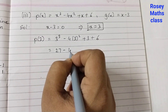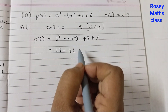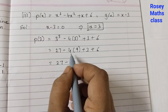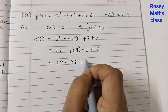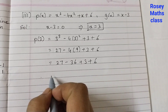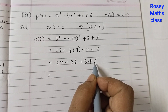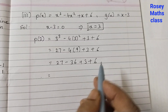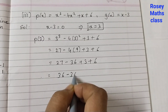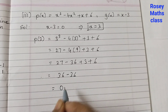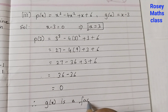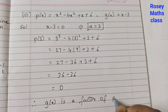Continuing: 27 − 4 × 9 + 3 + 6 = 27 − 36 + 3 + 6. Adding positive integers: 27 + 3 + 6 = 36. So we get 36 − 36, which equals 0. Since we are getting 0 at the end after simplifying, therefore g(x) is a factor of p(x).